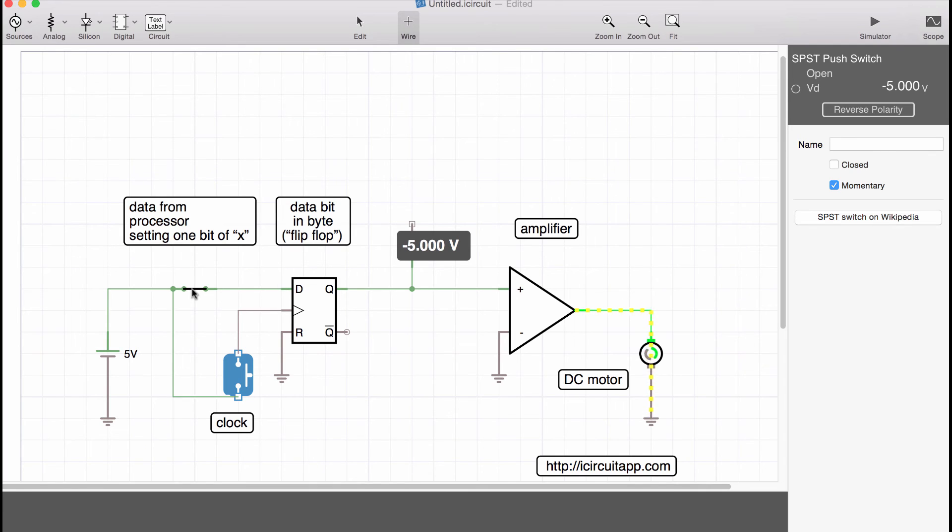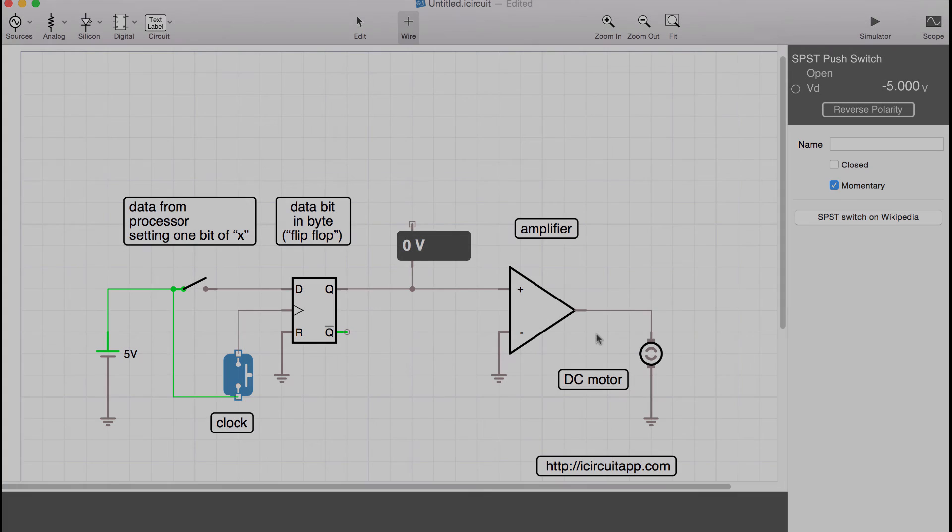Now let's assume the programming code decides to turn off the motor. So that would mean that the processor now applies a zero voltage to the input D, the data input of that flip-flop. So let me turn this off. And now is the next clock cycle. Now the motor is off. So you see how the program can simply by sending a number into that byte that is made up by these flip-flops, that this number by writing it into the memory can actually influence a motor that is connected to the Arduino pin.